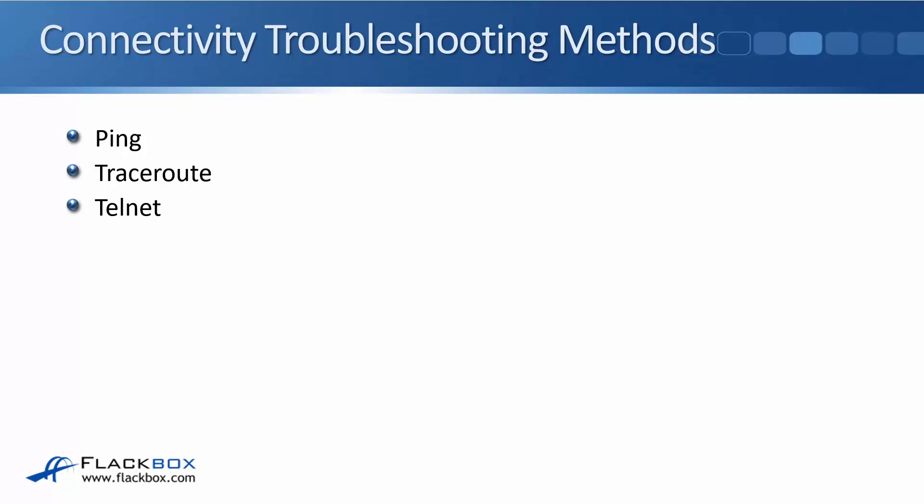A very common command for troubleshooting connectivity is ping, which checks connectivity between two devices. When you send a ping it uses ICMP, sending a packet from the source to the destination; the destination then sends a ping reply back. So ping verifies two-way connectivity — if the return path from destination back to source isn't working, the ping will fail too. This is often one of the first commands used when there appears to be a network connectivity issue.